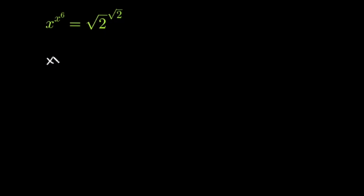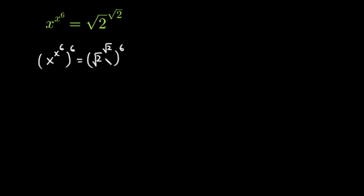In the first step I am going to multiply the exponent with 6 on both sides. So this equation is x raised to the power x raised to the power 6, multiply the exponent with 6, is equal to 2 under root raised to the power 2 under root, multiply the exponent with 6 on this side. In the next step I am going to change the position of this exponent — this 6 comes in here, and the same on this side.